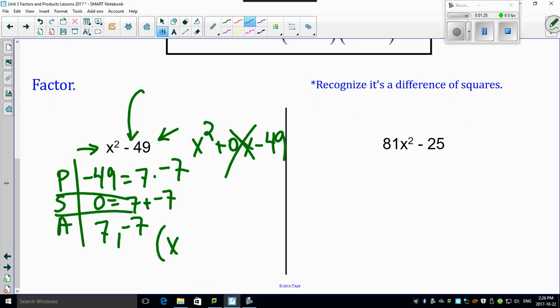So you would write this as x minus 7 and x plus 7. But I got a question. Can you not go from here to here in one easy step? As a matter of fact, yes, you can.